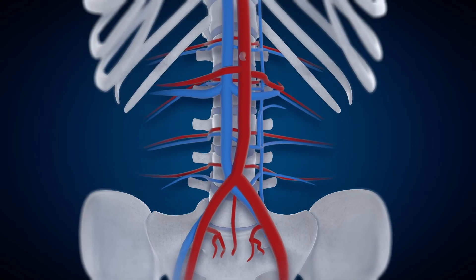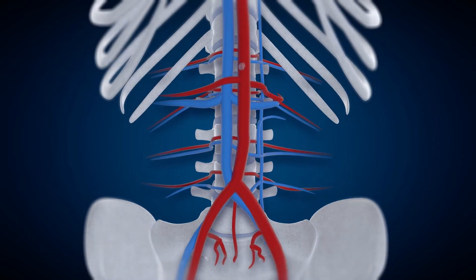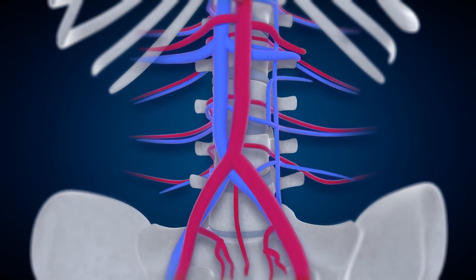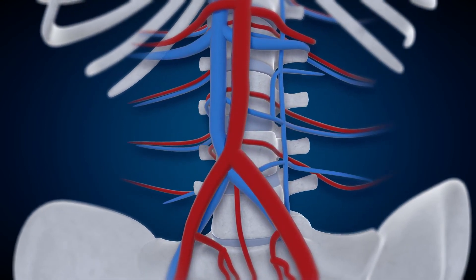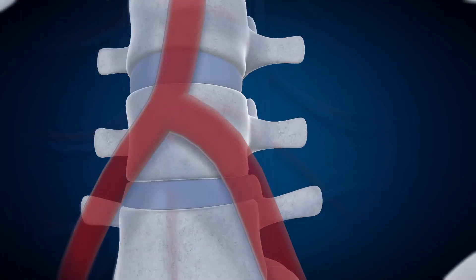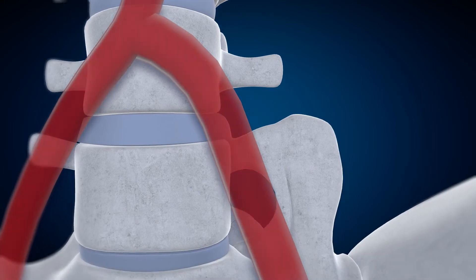Lumbar region vasculature primarily consists of the great vessels, the aorta and vena cava, and multiple segmental vessels and tributaries. Anatomical concerns are irregular vasculature, location of the iliolumbar vein, high bifurcation, and transitional anatomy.